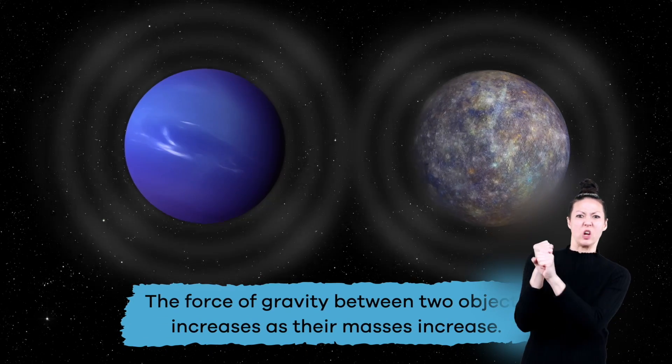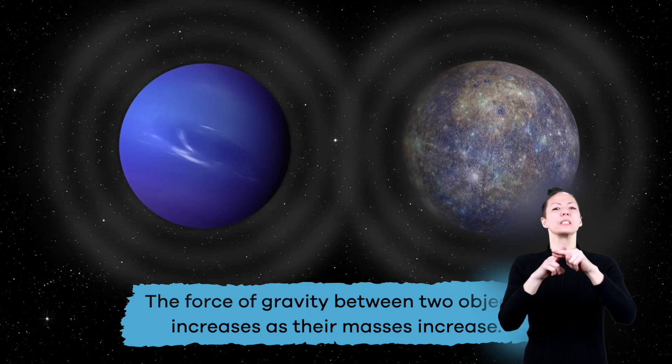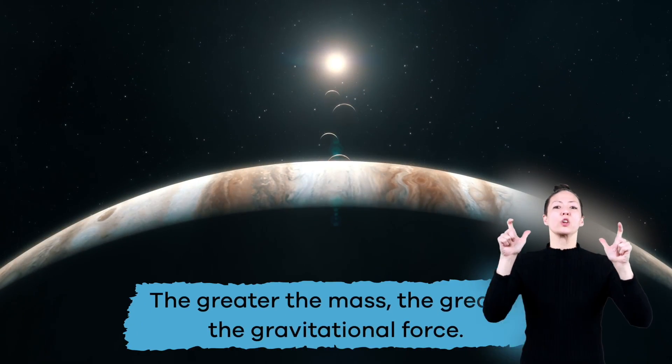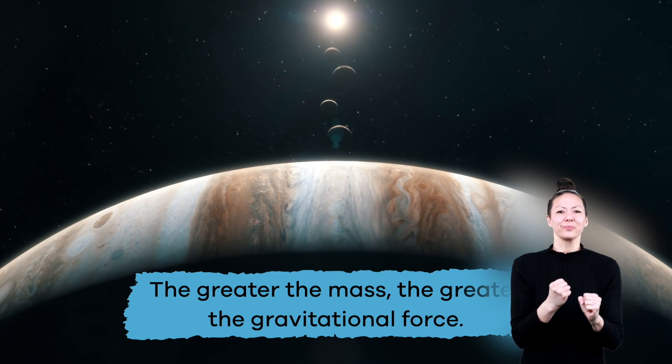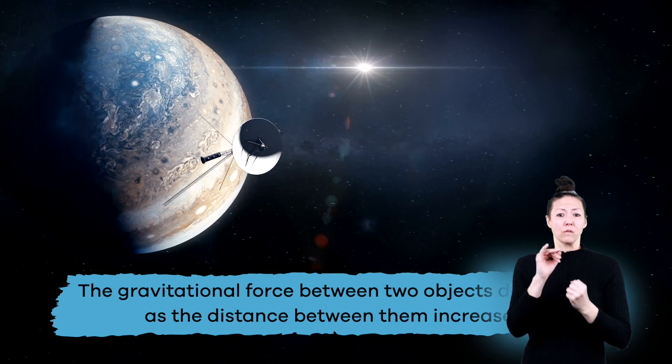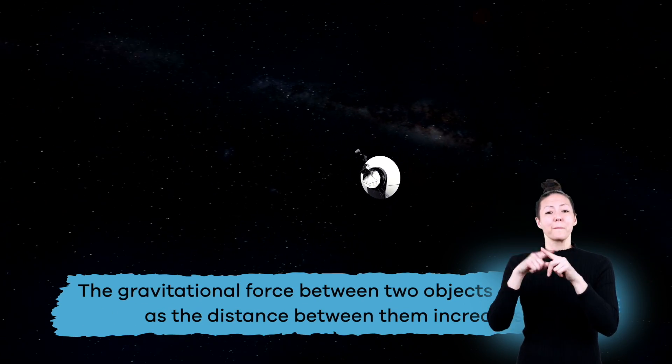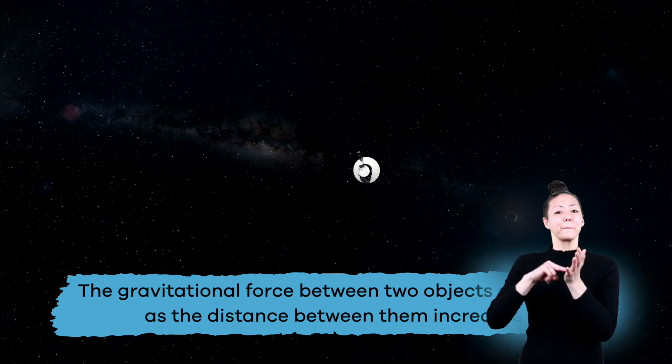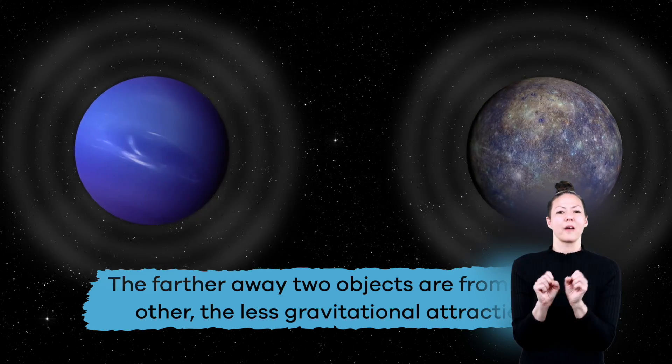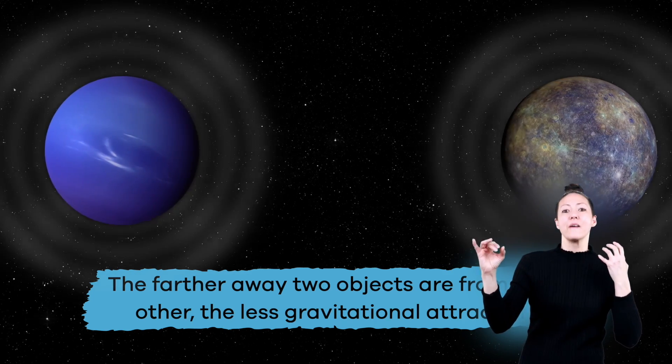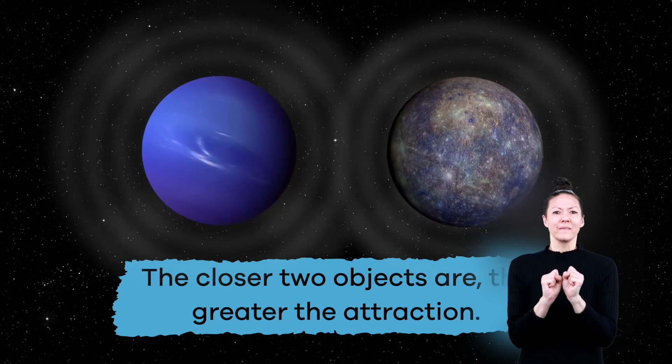The force of gravity between two objects increases as their masses increase. In other words, the greater the mass, the greater the gravitational force. Also, the gravitational force between two objects decreases as the distance between them increases, which means that the farther away two objects are from each other, the less gravitational attraction. The closer two objects are, the greater the attraction.